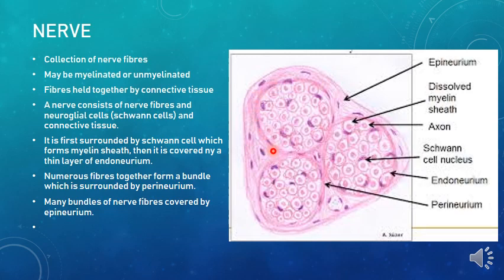The perineurium is semi-permeable and resembles more like an epitheloid tissue when compared to the epineurium and endoneurium. This is one bundle of nerve fibers, and this is another bundle. Many bundles together are covered by the epineurium.